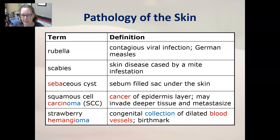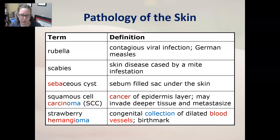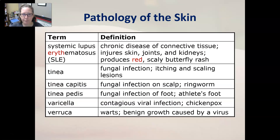A sebaceous cyst is a sebum-filled sac under the skin. Squamous cell carcinoma is a cancer of the epidermis layer that may invade deeper tissue and metastasize. A strawberry hemangioma is a congenital collection of dilated blood vessels, also known as a birthmark, and usually has a reddish color.